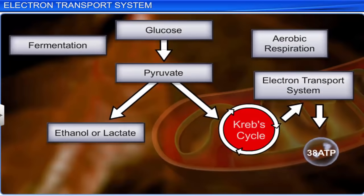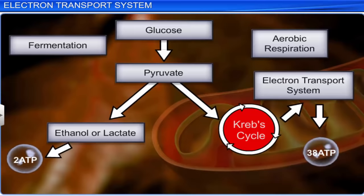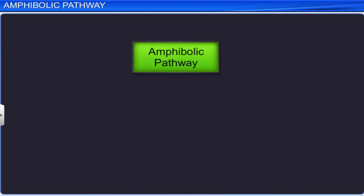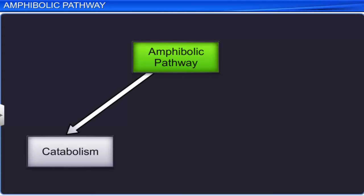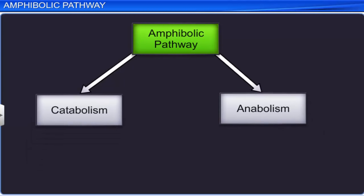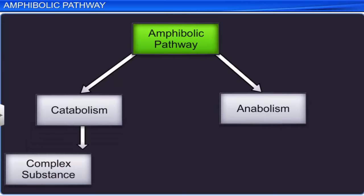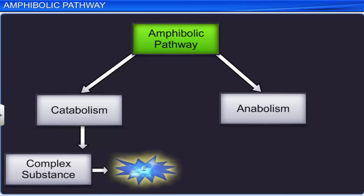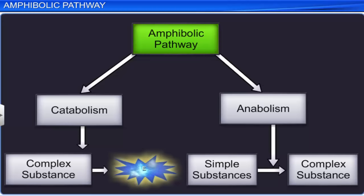Fermentation, on the other hand, results in a net gain of 2 ATP molecules from the partial breakdown of the glucose molecule. The amphibolic pathway involves both catabolism and anabolism, where catabolism stands for the breakdown of complex substances to produce energy, and anabolism stands for the synthesis of complex substances from simple substances.